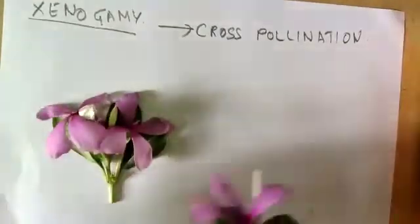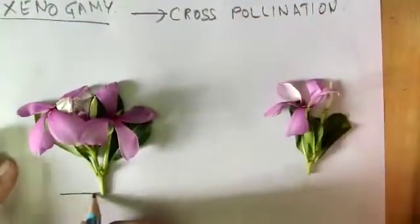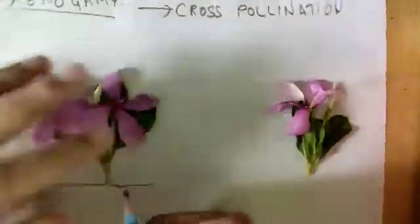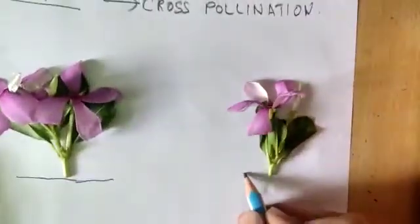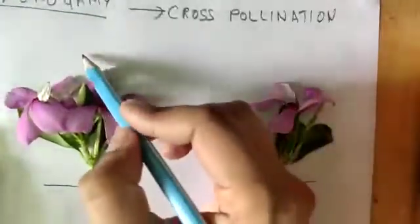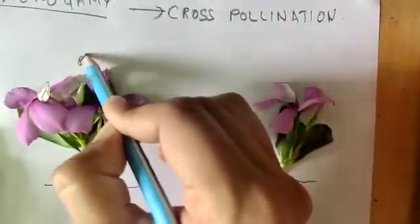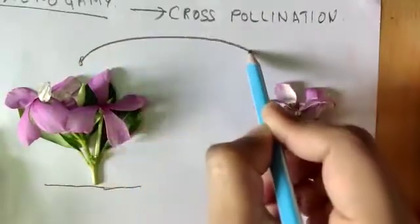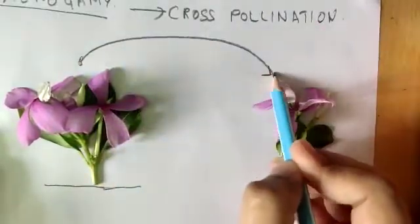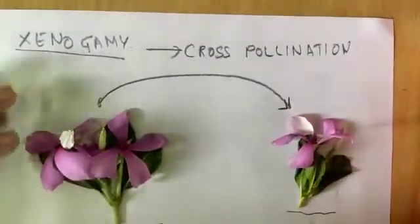If there are two different plants, and the pollen grain of this plant goes and lands on the stigma of this other plant, it's known as xenogamy.